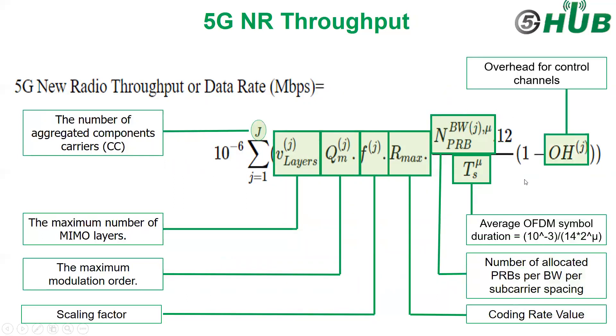The next one is overhead for control channels. This number will be different if we are talking about FR1 or FR2, as it represents the overhead for control channels. For example, if we are talking about downlink for FR1 or frequency range 1, it will be 0.14. And for FR2 for downlink, it will be 0.18.